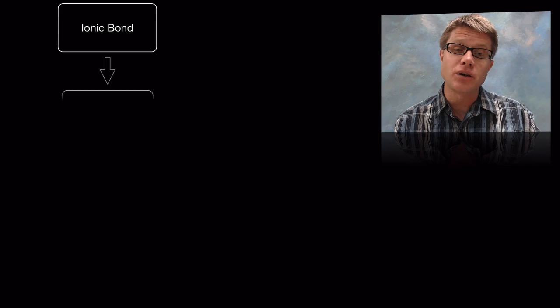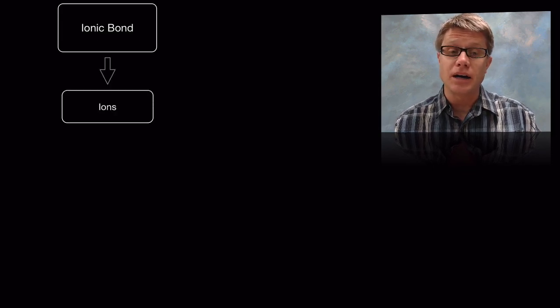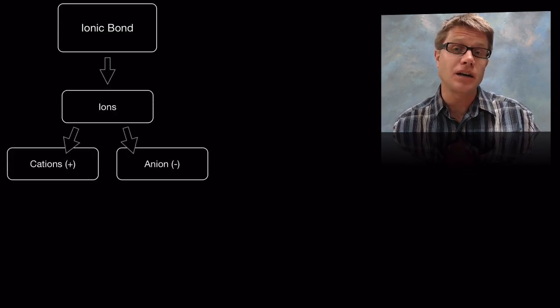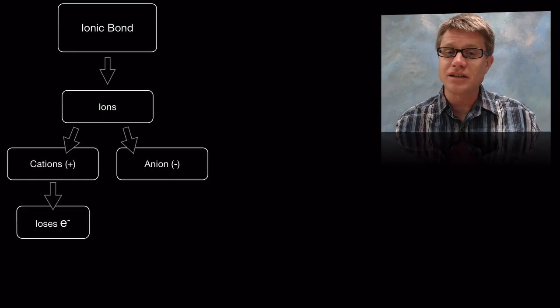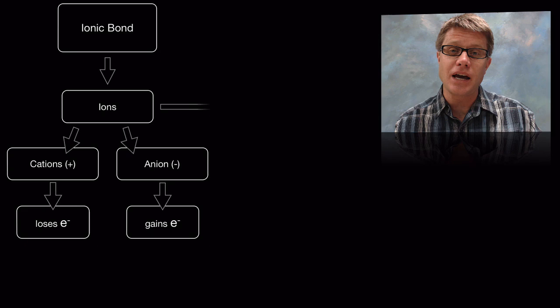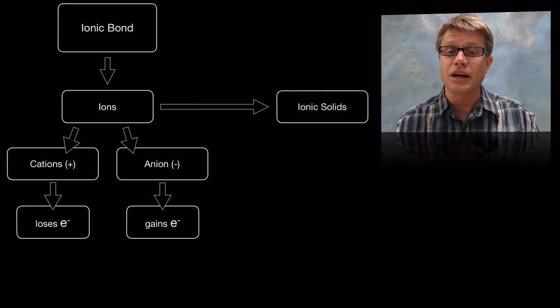An ionic bond is going to be between ions. It's a connection between ions. We're going to have a cation and an anion. Cations are going to be positive. That means they've lost an electron and anions are going to be negative. And so what they form is something called an ionic solid.